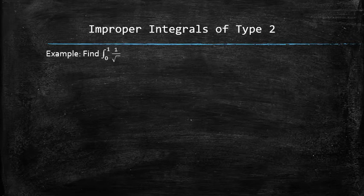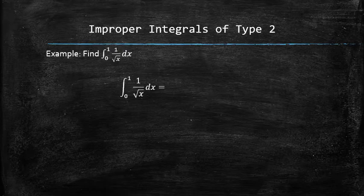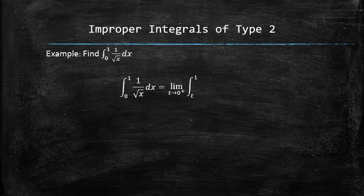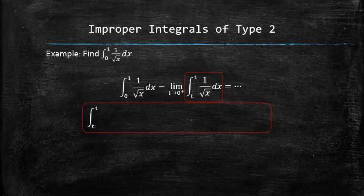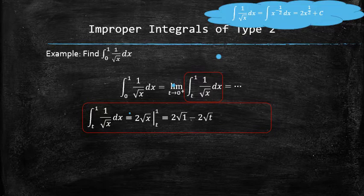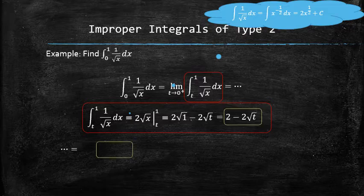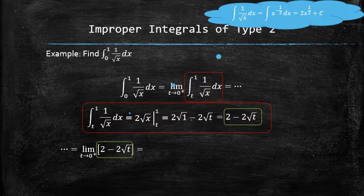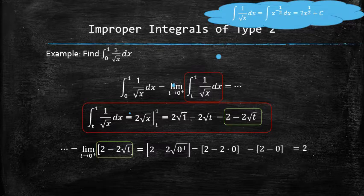Let's do an example and compute the following integral. We replace the lower limit zero with t and set up a limit with t approaching zero from the right. Now that we don't have to worry about the discontinuity in the lower limit, we can focus on the integral. We use the integration rules to find the general antiderivative and then apply the fundamental theorem of calculus to find the integral in terms of the variable t. Only now we can come back to the original problem and focus on finding the limit. We have a variety of tools available, including graphical, numerical, and analytical approaches. In this case, we were able to find the limit and therefore we conclude that the original integral converges.